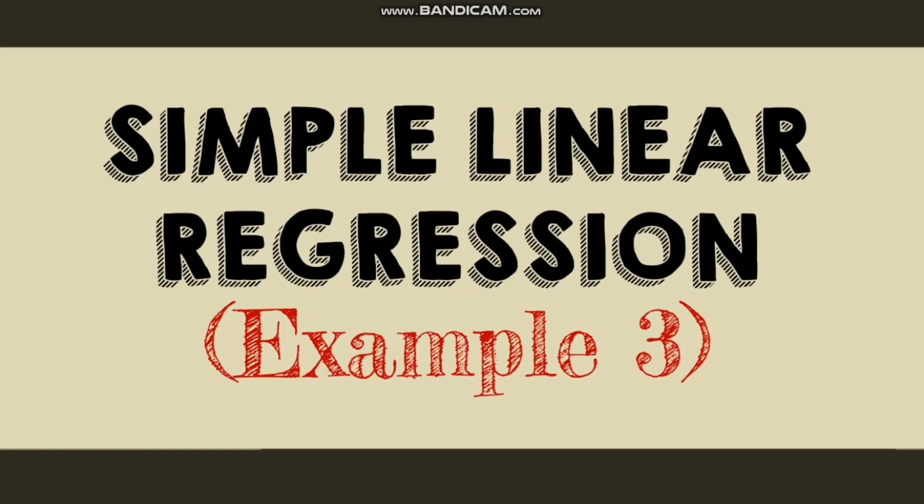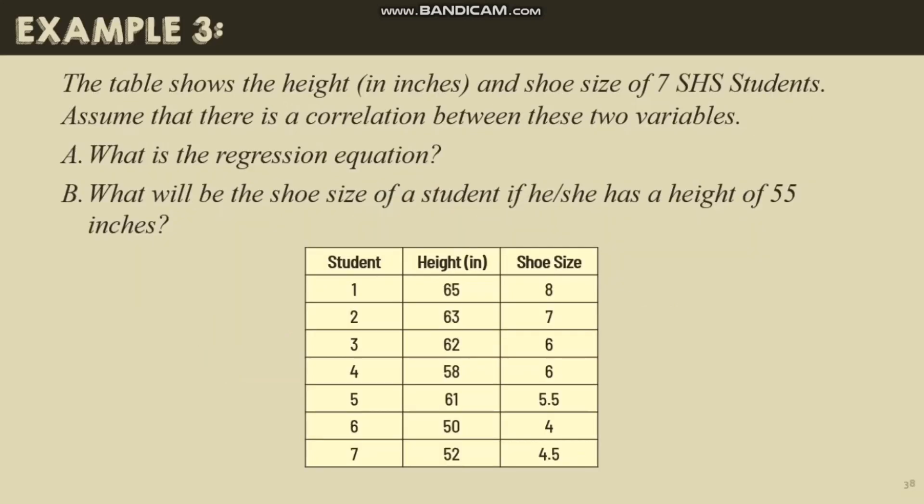Let us have example number three for a simple linear regression. The table shows the height in inches and the shoe size of seven senior high school students. Assume that there is a correlation between these two variables. What is the regression equation? What will be the shoe size of a student if he or she has a height of 55 inches?